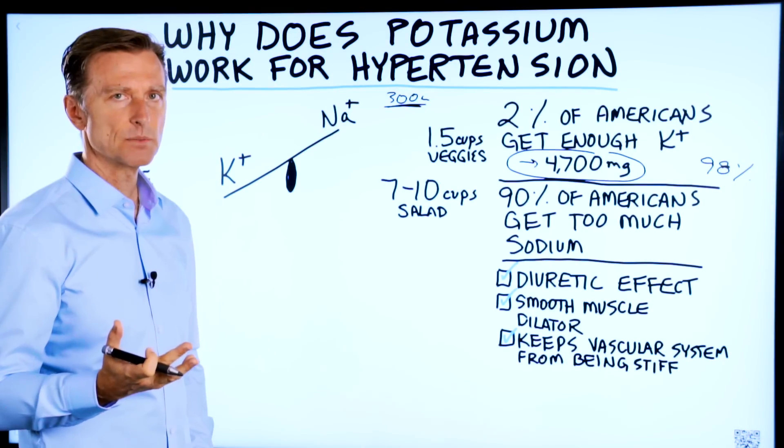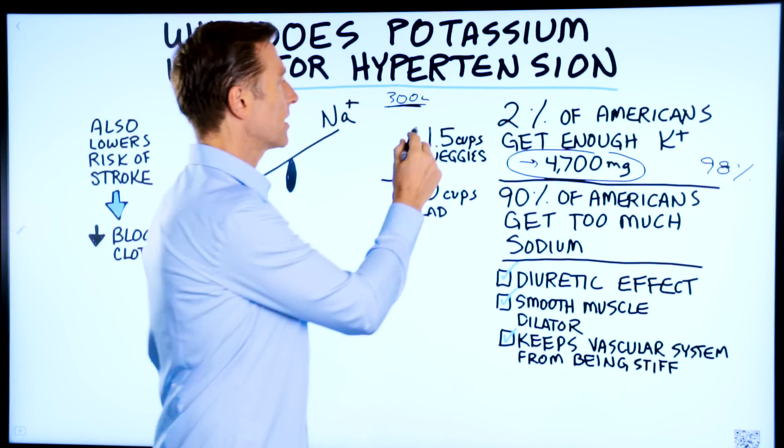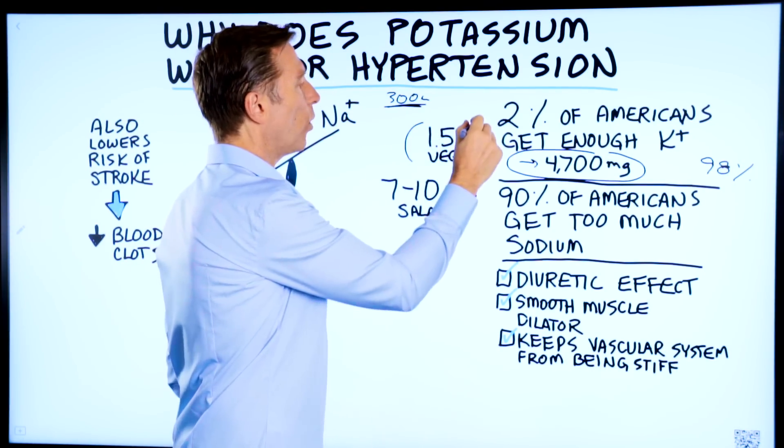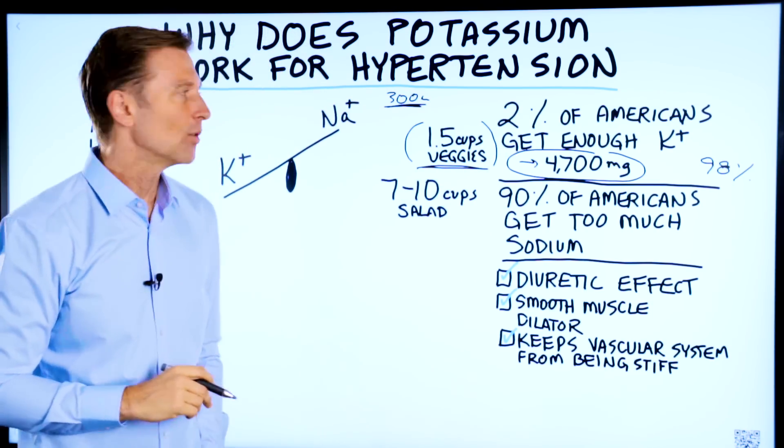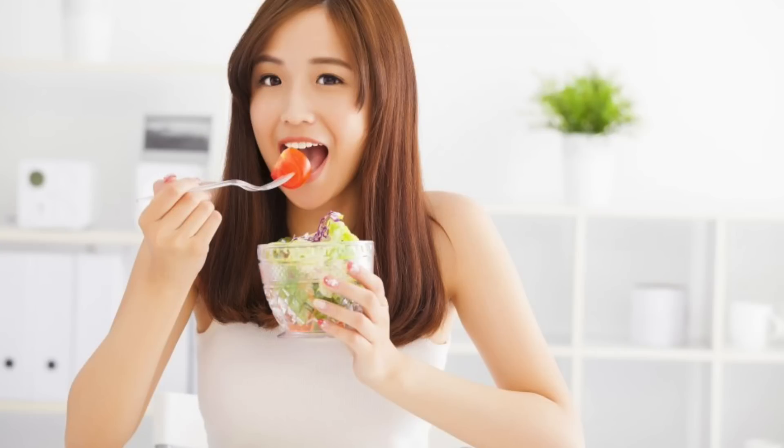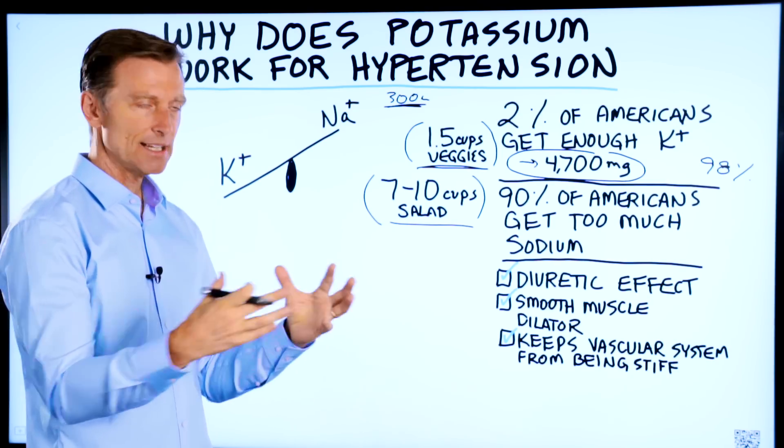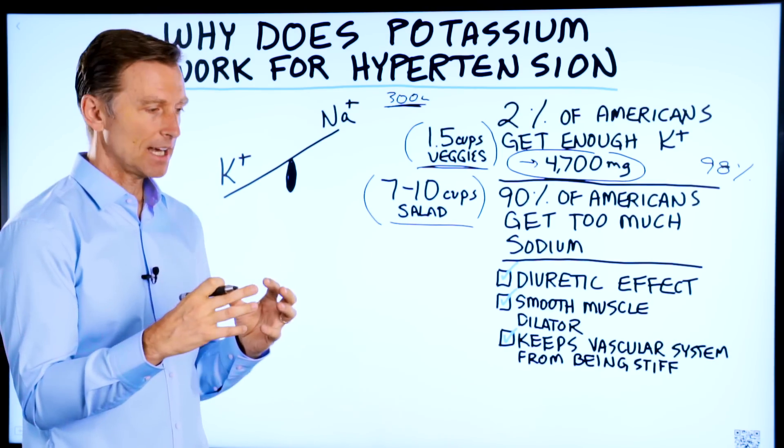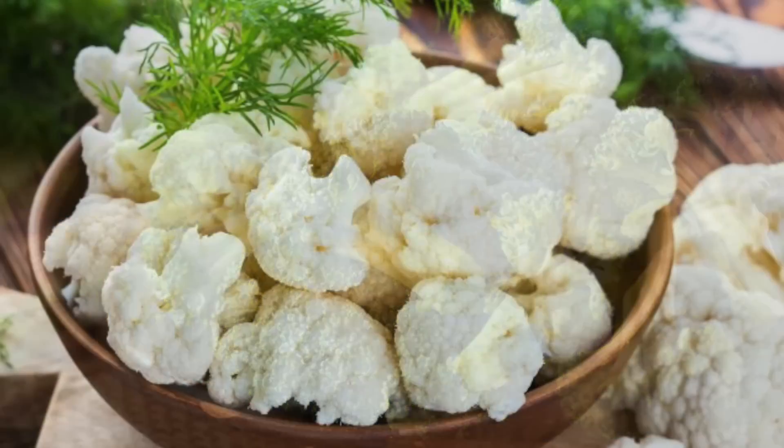But mostly you're going to get your potassium from leafy greens, certain vegetables. The problem with that is an average American only consumes one and a half cups of veggies per day when they actually need about seven to 10 cups. But realize when I'm talking about seven to 10 cups, I'm talking about loose lettuce. I'm not talking about concentrated vegetables like broccoli, for example, or cauliflower.